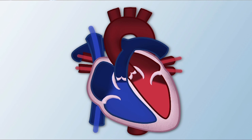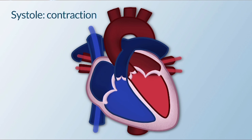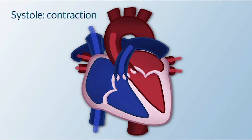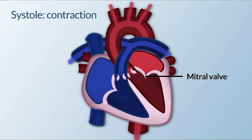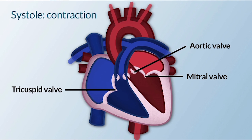During the contraction of the heart, called systole, the blood is pumped out of the ventricles and into the circulation. At this time, the mitral and tricuspid valves are closed and the aortic and pulmonic valves are open.